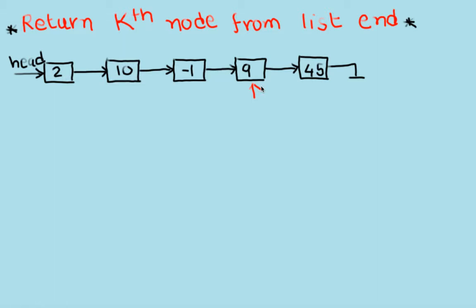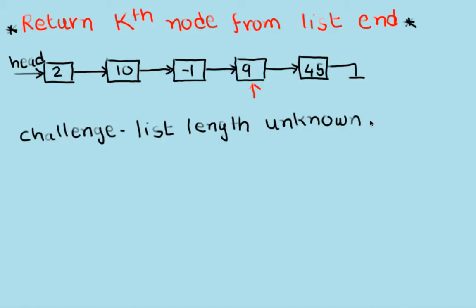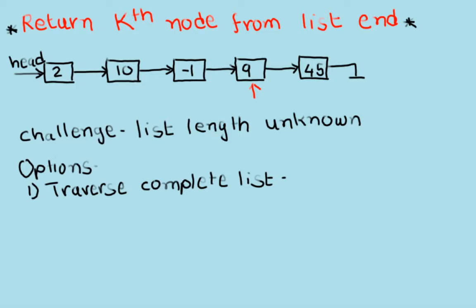The main challenge in this kind of problem is that the length of the list is not known. If we knew the length was 5, we would know the fifth node is the last one and the fourth node is the second from the end. But since the length is not known, we need to figure out how to solve this. Let's see what the options are.